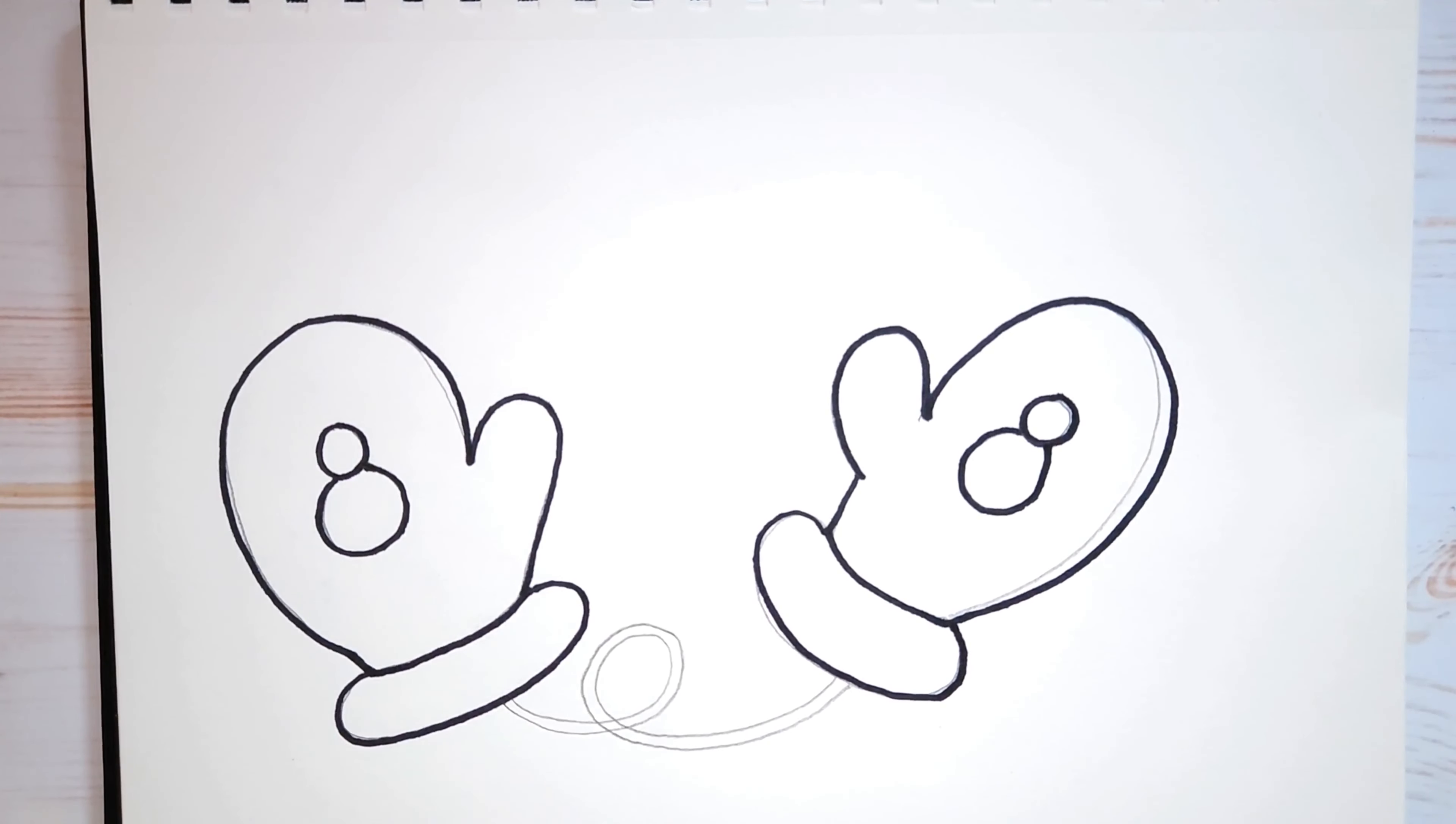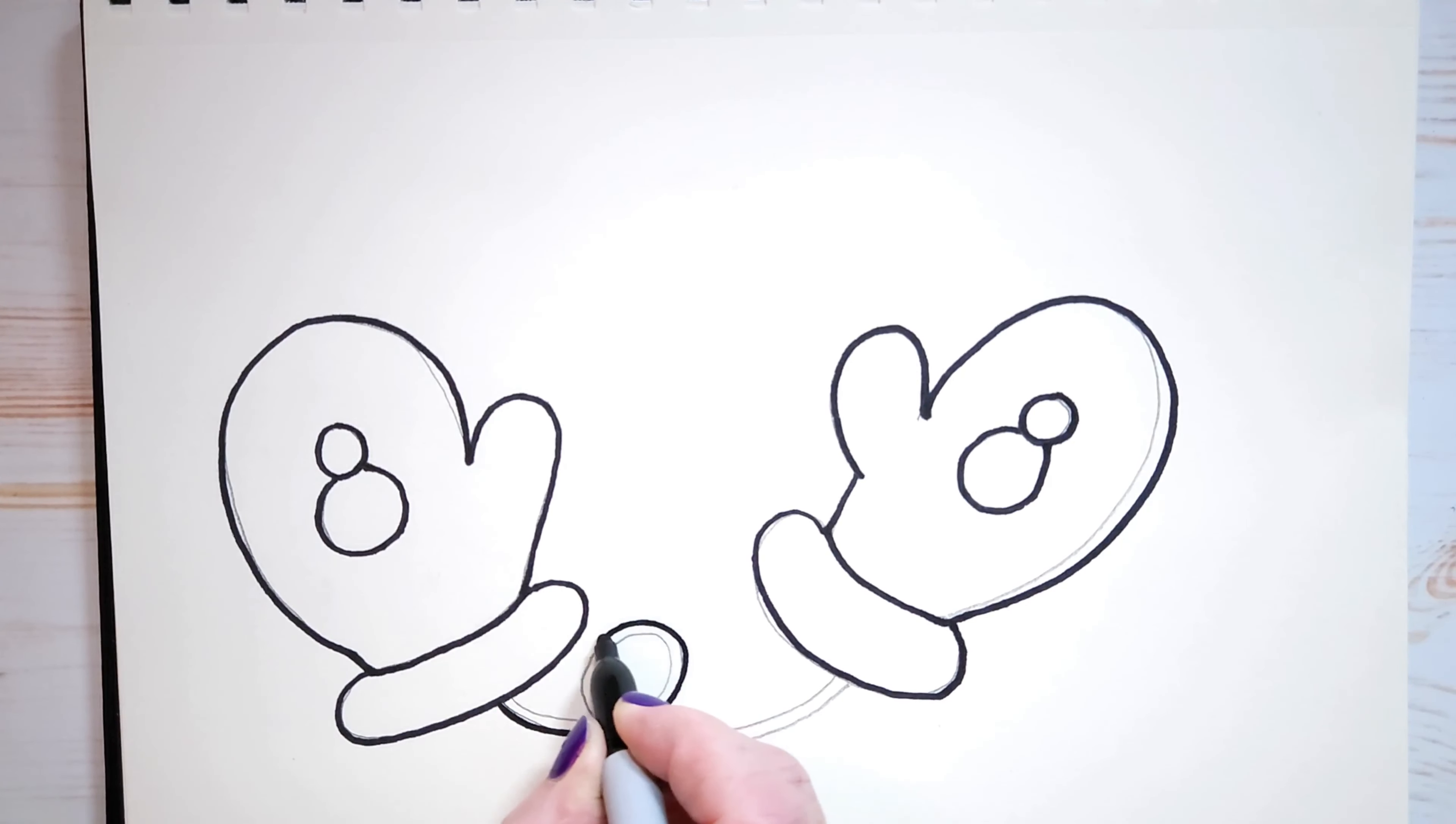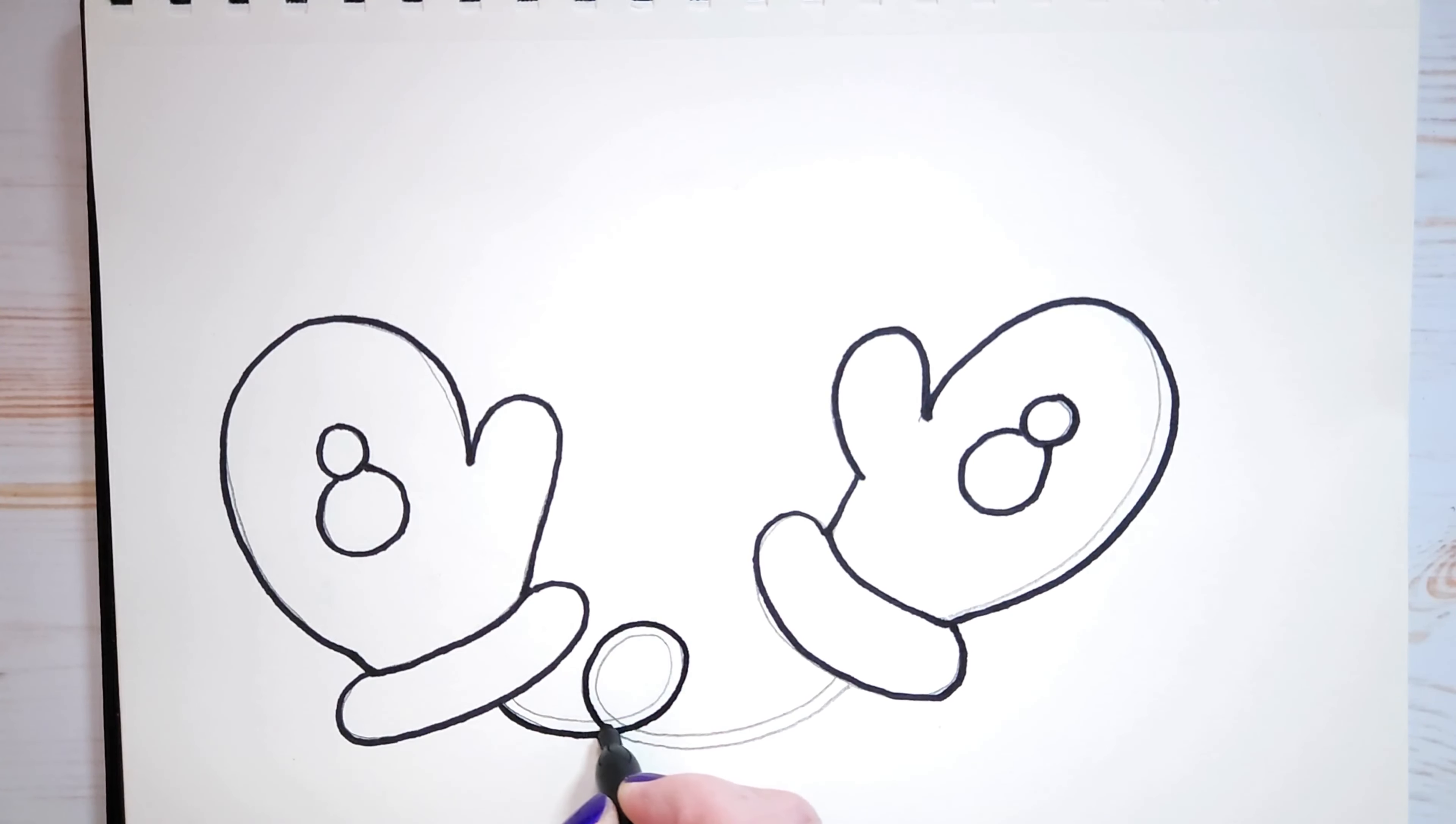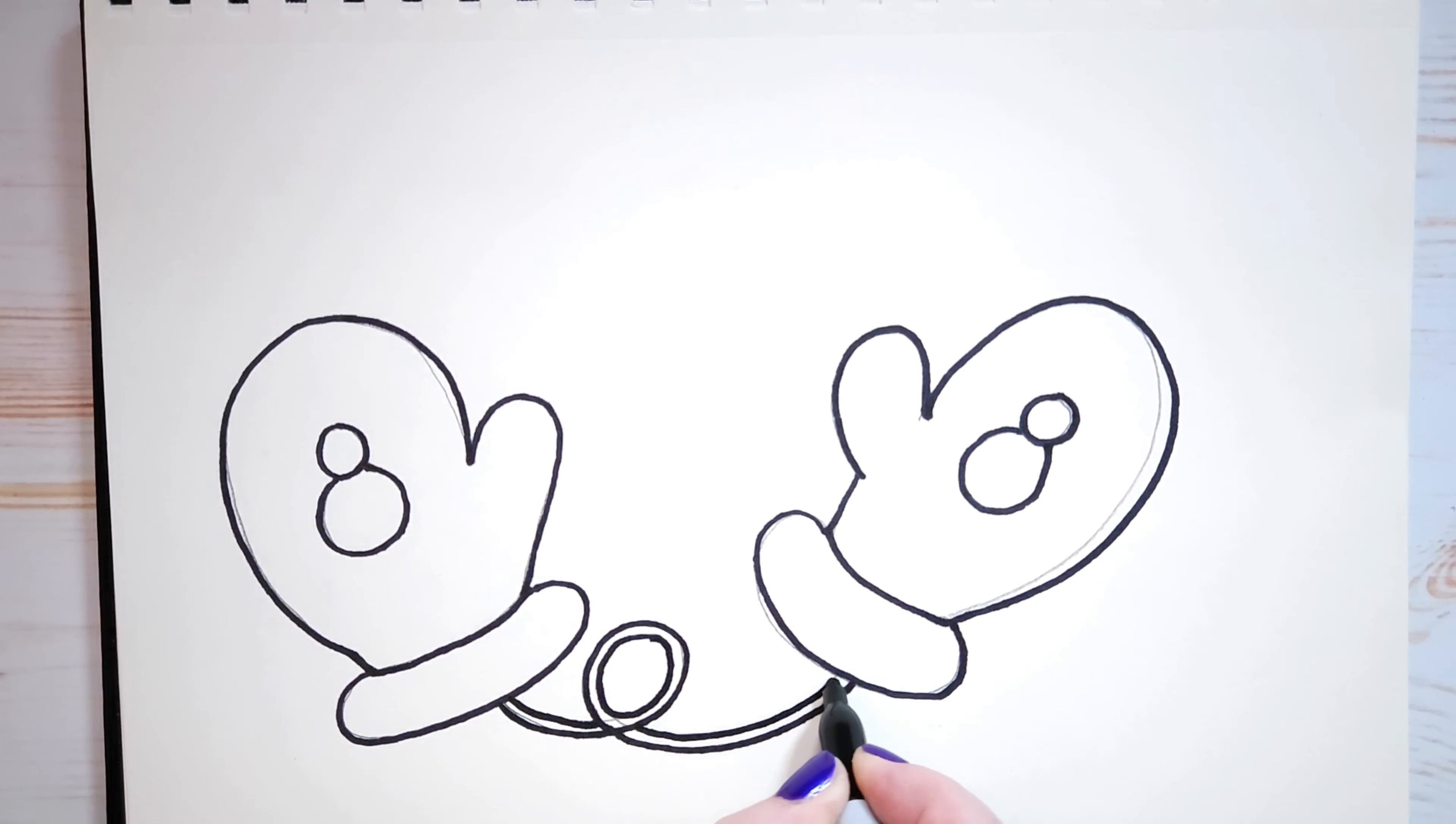Now if you want to, you can outline the ribbon that holds them together. Just be careful because if you have a thick marker, you might accidentally color it in at the same time. And I want this ribbon to be red. So what I'm going to do for the middle part is I'm just going to draw a circle. Just like that. I'm not going to draw those little lines that we had. But I'm just going to outline. There we go.